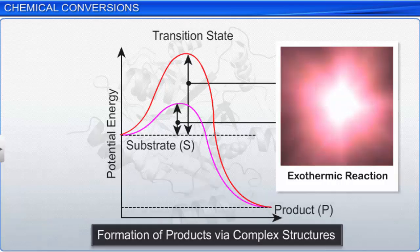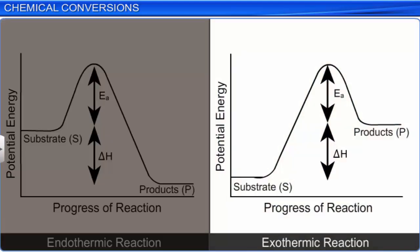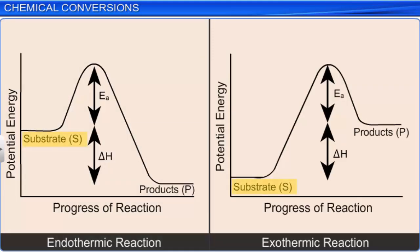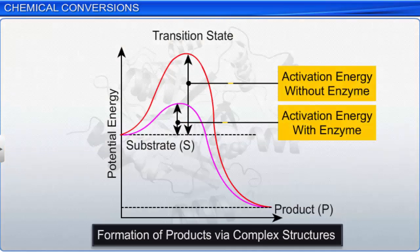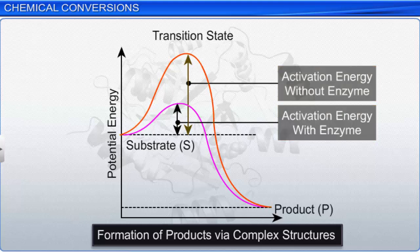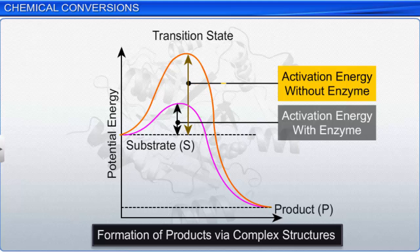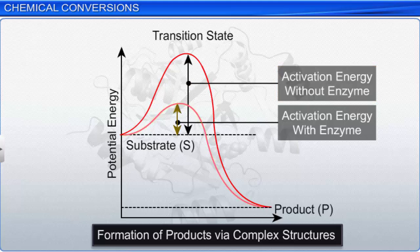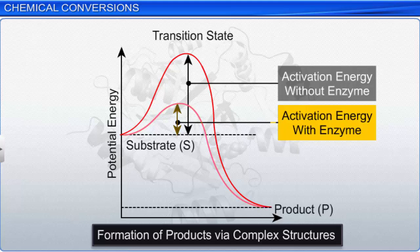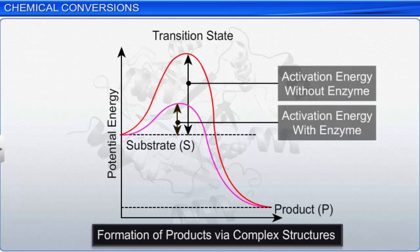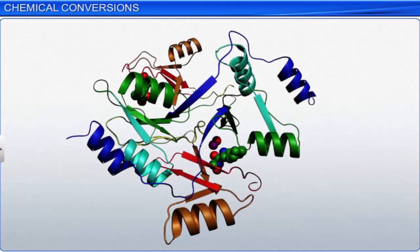However, whether an exothermic or an endothermic reaction, the substrate S has to go through a much higher energy state or transition state. In the graph, the red curve indicates that in the absence of an enzyme, the activation energy for a reaction is high. On the other hand, the pink curve shows that in the presence of an enzyme, the activation energy gets lowered, due to which the substrate transforms into a product quicker. Therefore, enzymes reduce the activation energy barrier by making the transition from S to P easier, bringing about chemical and metabolic conversions at a high rate.